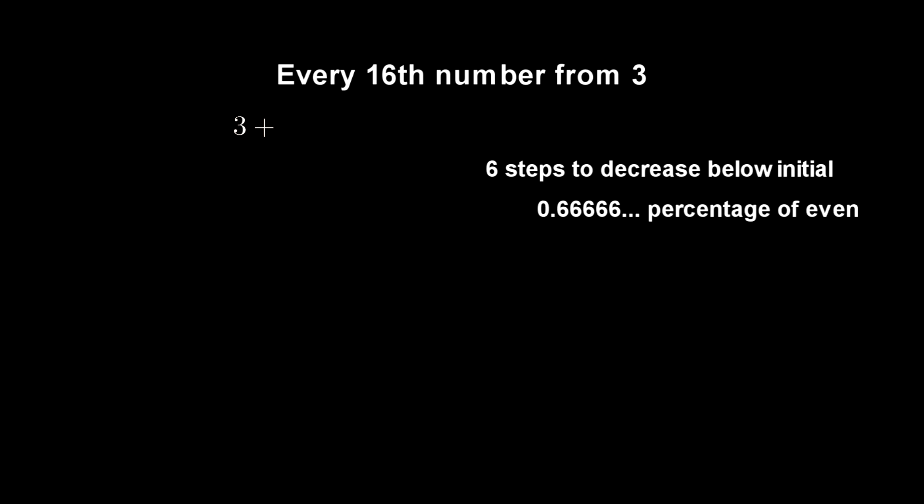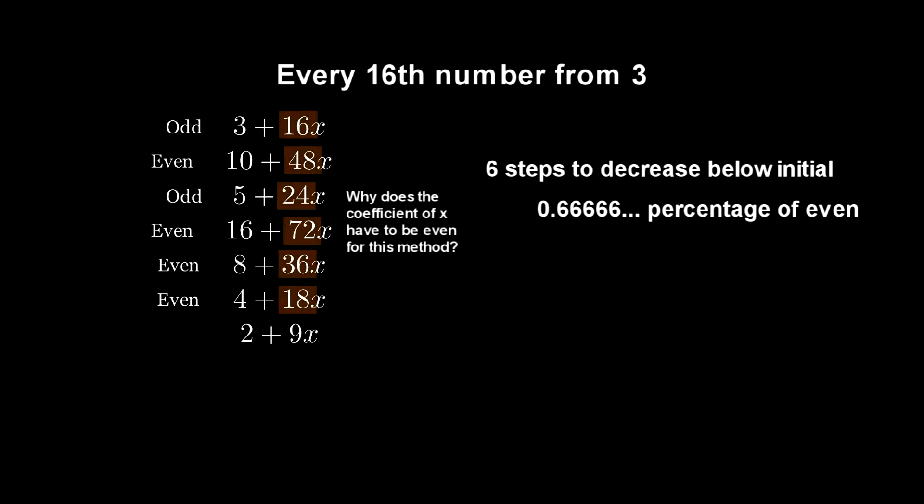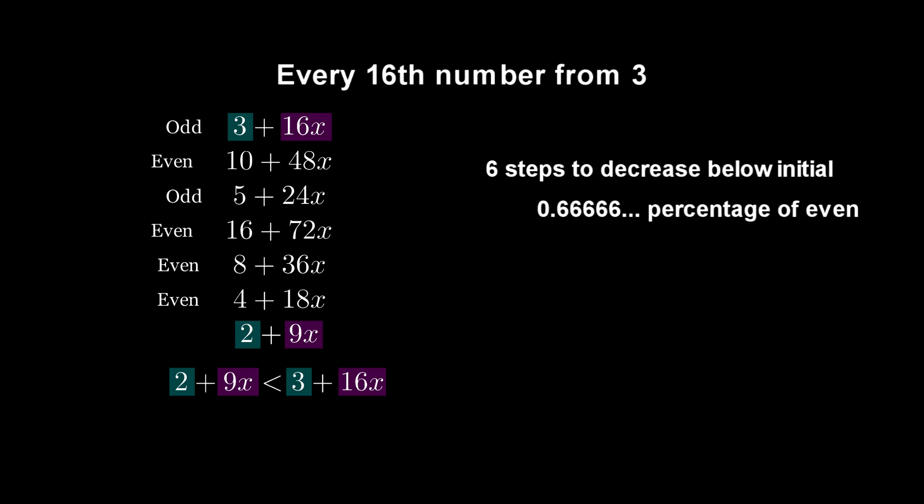We can write this number as 3 plus 16x. This number we know is odd, so we multiply by 3 and add 1 to get... This number is even, so we get... And we can continue this pattern. Note that for this method to work, the coefficient of x must be even. Since the coefficient of x and the constant is less than the corresponding starting values, we can deduce that this number is less than the initial number.